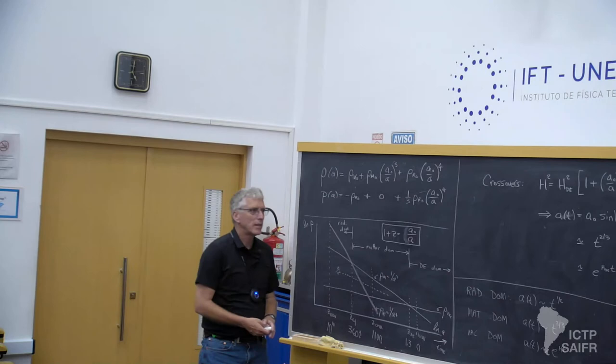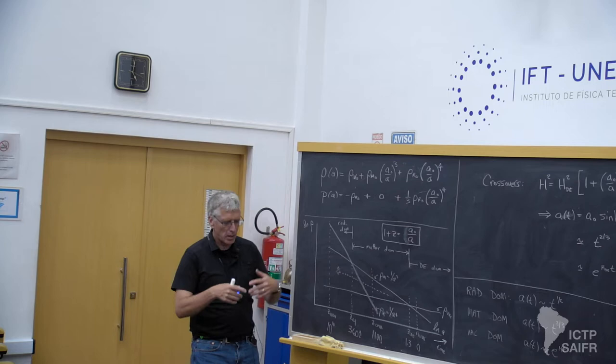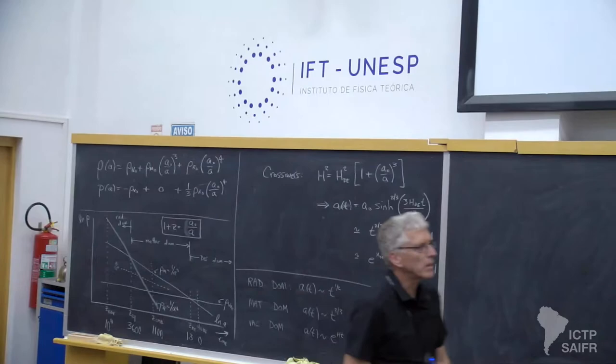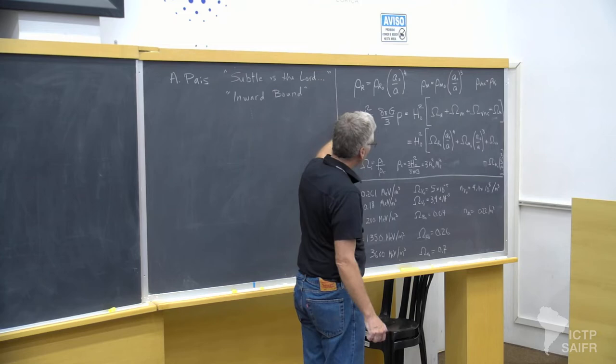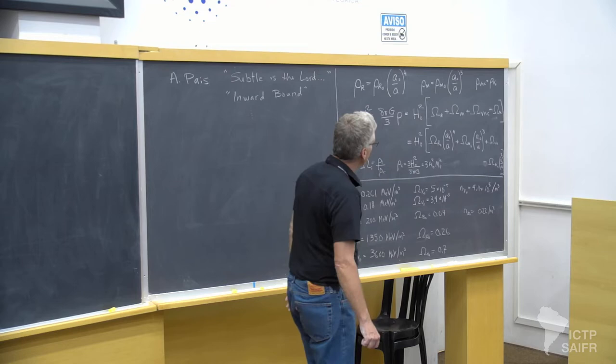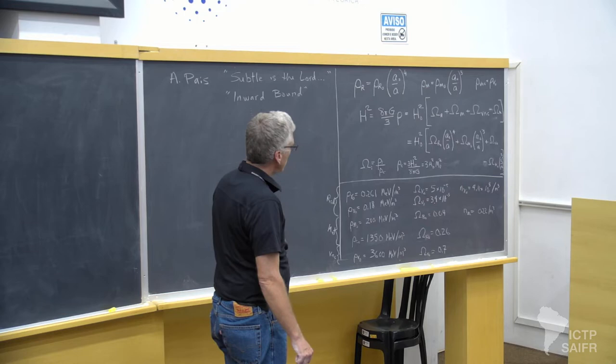I want to pick it up where I left off. Einstein's equations basically turn into the Friedmann equation, which is h squared — remember h is a-dot over a, so it's basically the first derivative of the scale factor, the thing we're trying to find — and that's given by the energy density up to factors of Newton's constant.